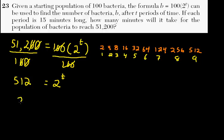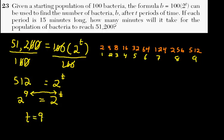So what we have is 2 to the 9 equals 2 to the t. It should be pretty obvious that 9 and t are equal — t equals 9.